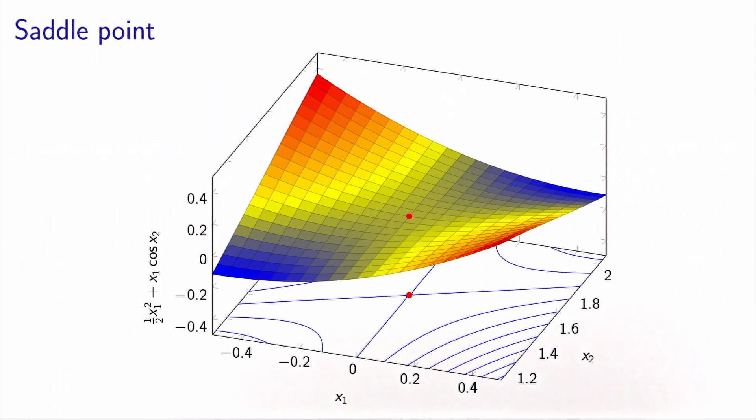Here, I made a zoom close to the solution that was found by the algorithm. And you can see indeed that in these directions, the function is convex. While in these directions, the function is concave.